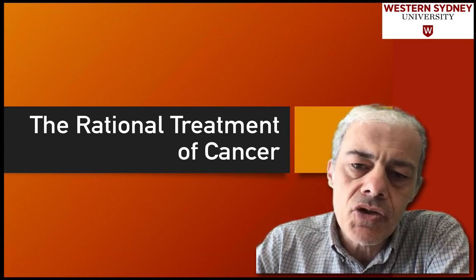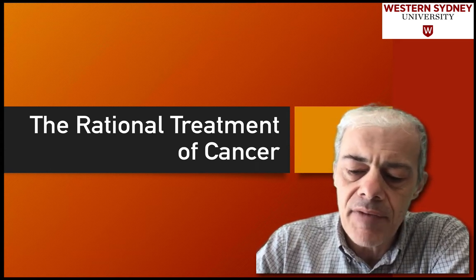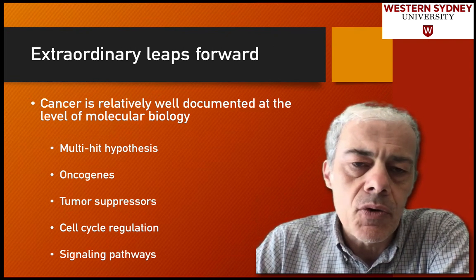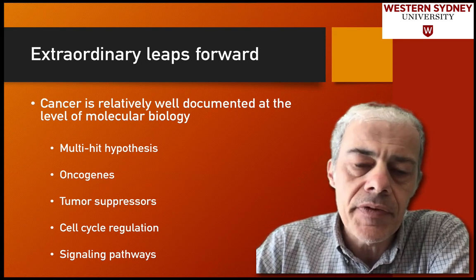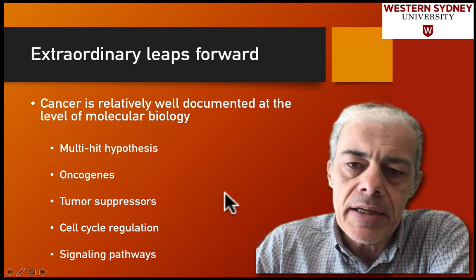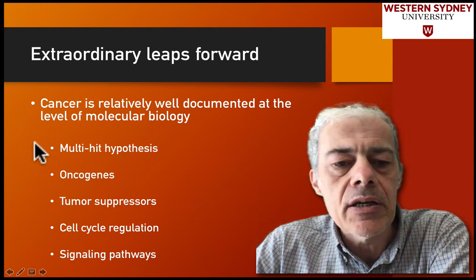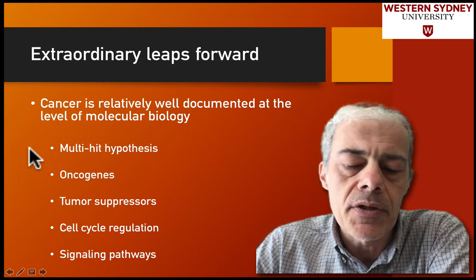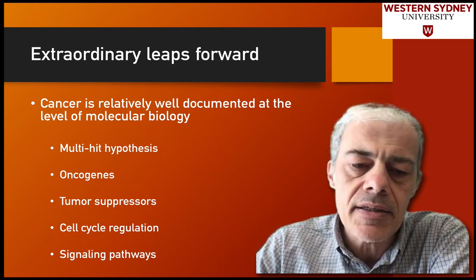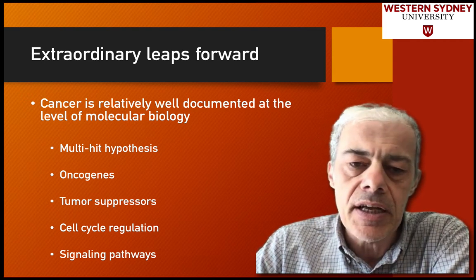Today we're going to be looking at some of the rational treatments of cancer that have arisen since our molecular understanding of cancer has improved. Looking back at this series of videos, we've been looking at advancements in documenting the molecular biology of cancer, including the multi-hit hypothesis — where multiple genetic events within a particular cell over time knock out or affect multiple genes, giving the cell a growth advantage.